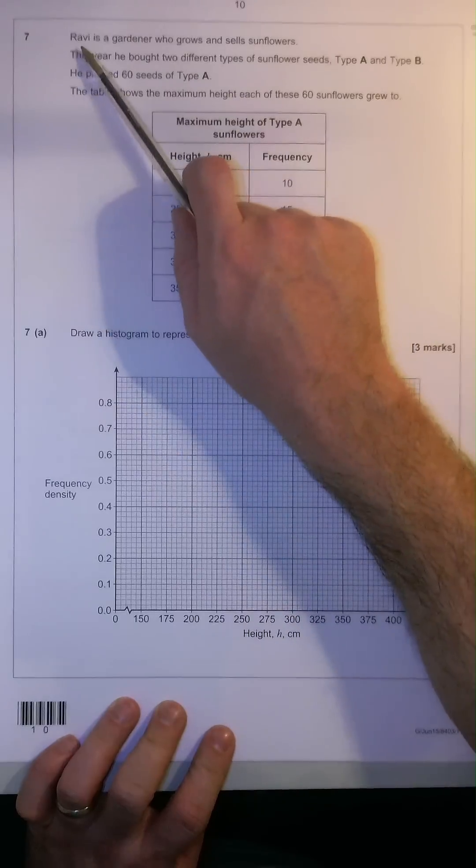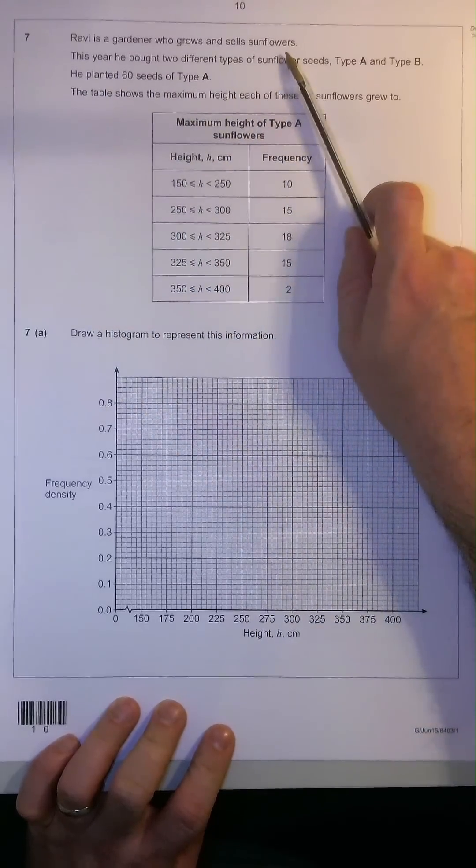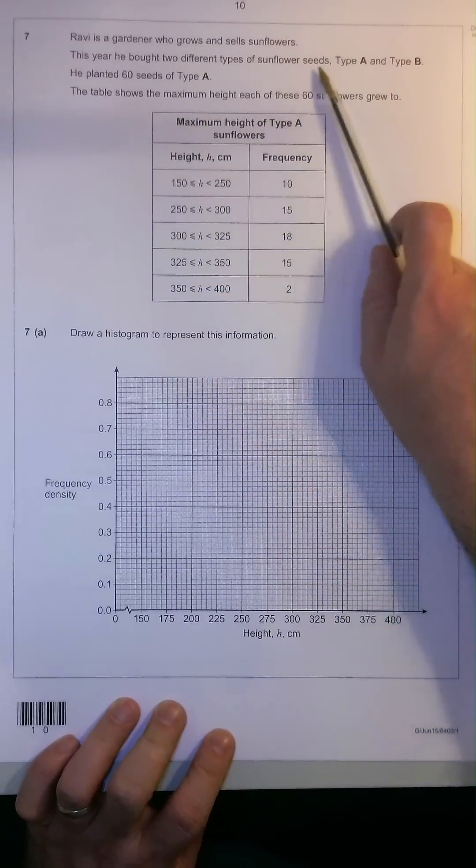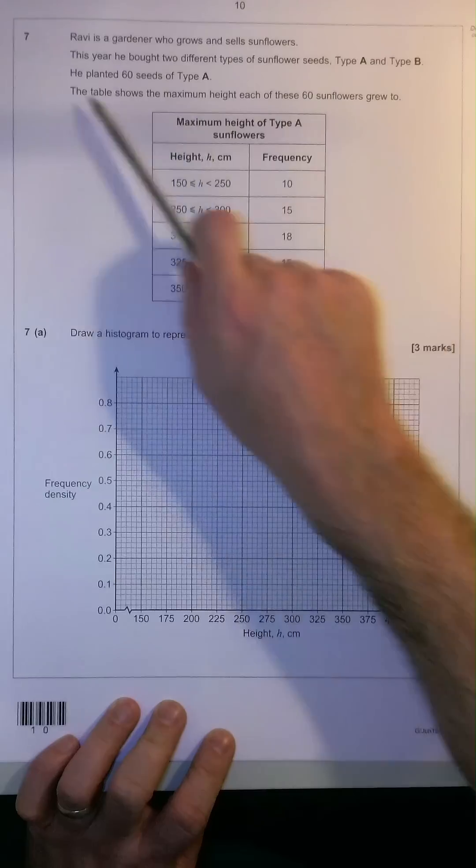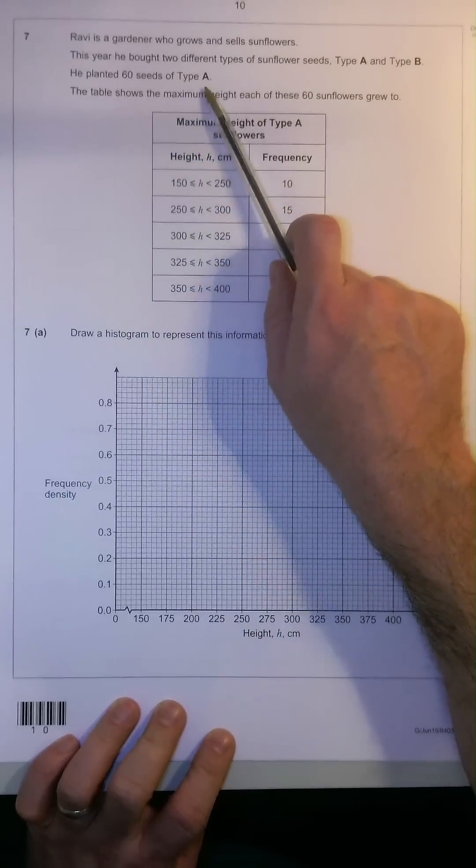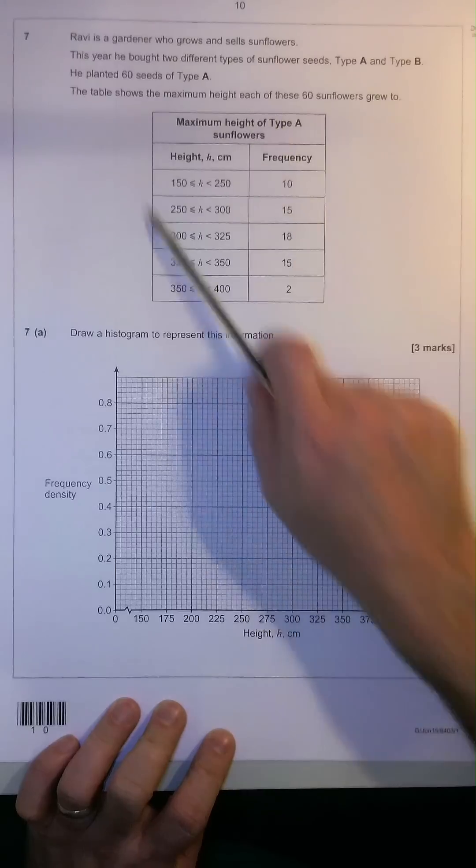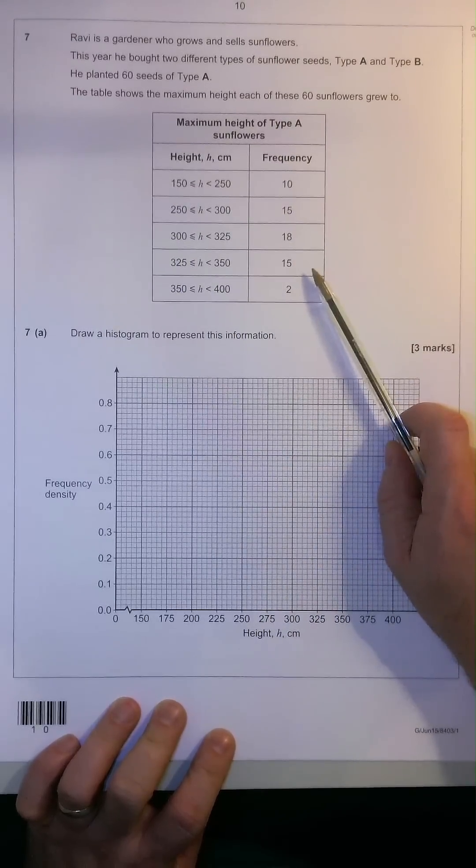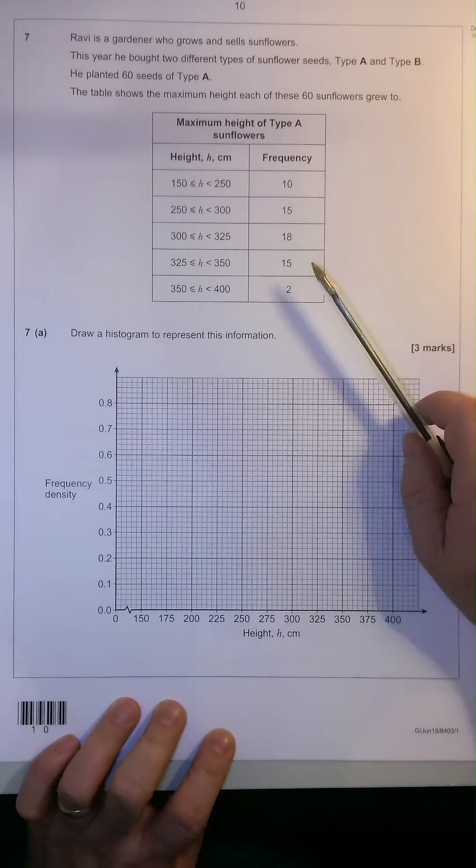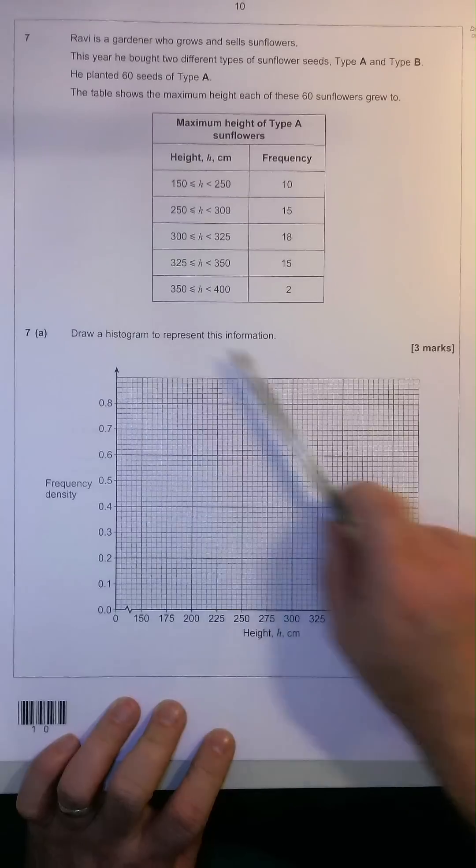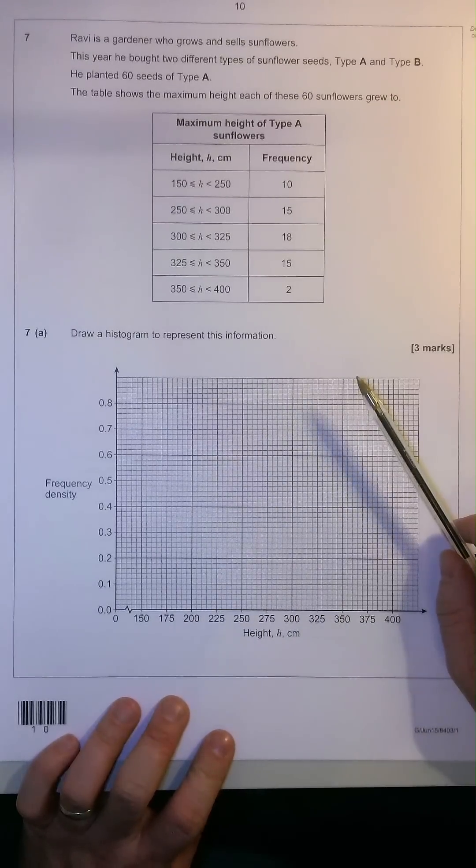The question asks, Ravi is a gardener who grows and sells sunflowers. This year, he bought two different types of sunflower seeds, Type A and Type B. He planted 60 seeds of type A. Now, the table below shows the maximum height each of these 60 sunflowers grew to. And the question asks us to draw a histogram to represent the information.